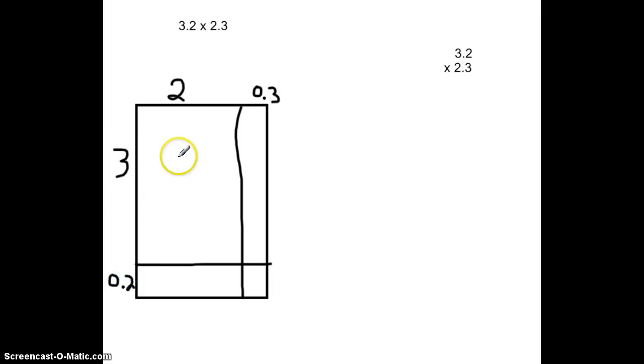3 times 2, once again, gives us an area of 6. 3 times 0.3. If we had 0.3 and added it 3 times, we would get 0.9. So 3 times 0.3 is 0.9. Sorry about that.